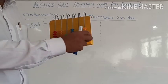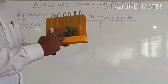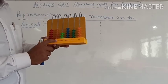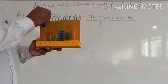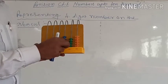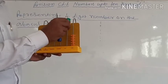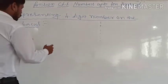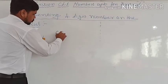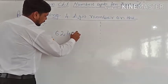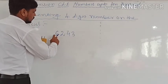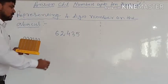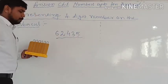So we have five places: ones, tens, hundreds, thousands, and ten-thousands. Now let me show how to represent a number on the abacus. For example, I want to represent the number 62,435.